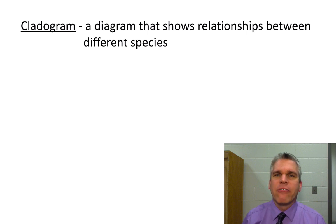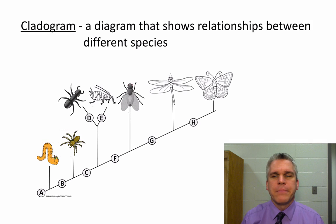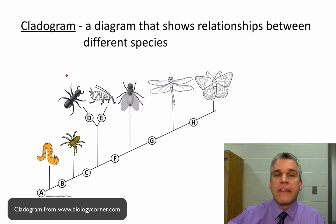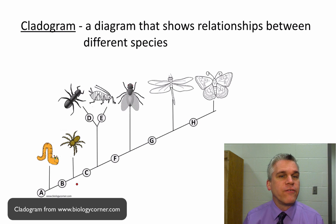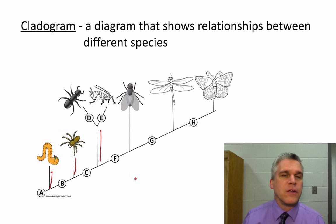A cladogram is a diagram that shows relationships between different species. Here's an example of a fairly simple cladogram. You can see that we have a group of animals that all have in common is that they are all invertebrates. But notice, off of this main line, we have these different branches — there's one going to a worm, one going to a spider, one going to a couple different insects, and so on.